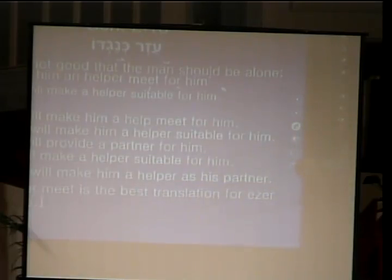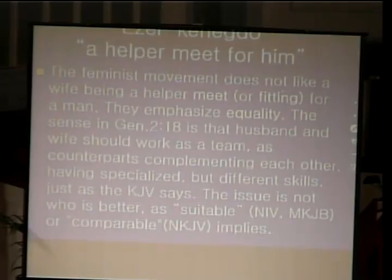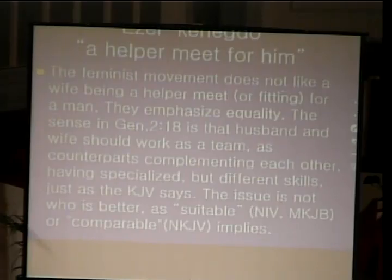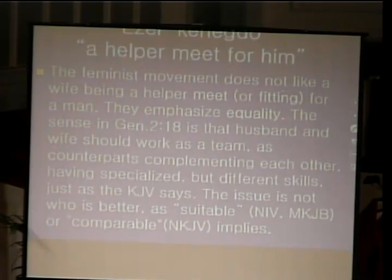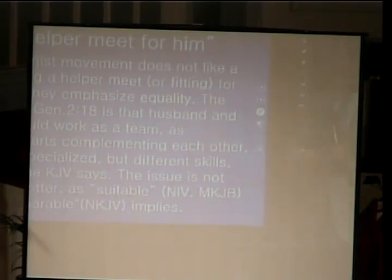The feminist movement does not like the idea of a wife being a helpmate or subordinate to man. They emphasize equality. But the sense of Genesis 2:18 is that husband and wife should work as a team, as counterparts, complementing each other with specialized but different roles — just as the King James Bible says. The issue is not who is better, but who is suitable or comparable.